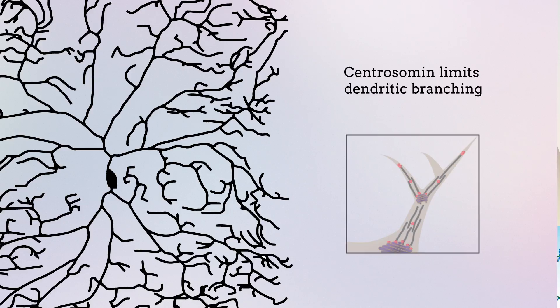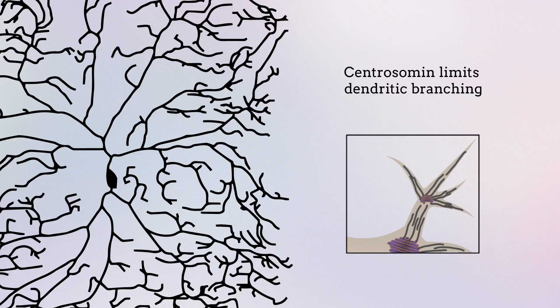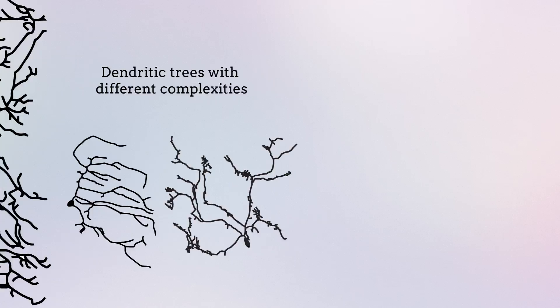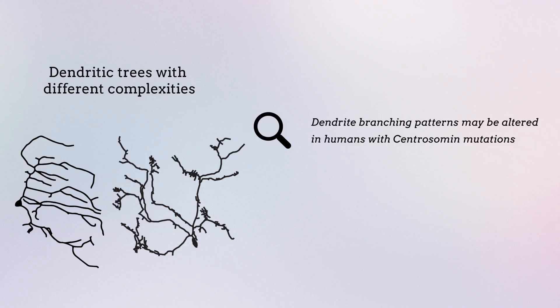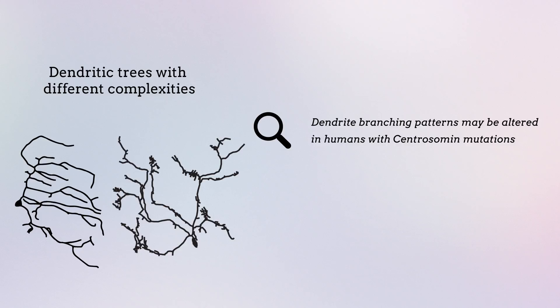Taken together, these findings revealed that centrosomin limits dendritic branching during neuronal development by inhibiting the formation of stabilizing microtubules in newly formed dendrites. This new understanding of the function of centrosomin helps to explain how dendritic trees with different complexities are formed. Further studies are needed to determine whether dendrite branching patterns are altered in humans with centrosomin mutations, and whether interventions targeting dendrite formation processes might protect against the onset of some neurological disorders.